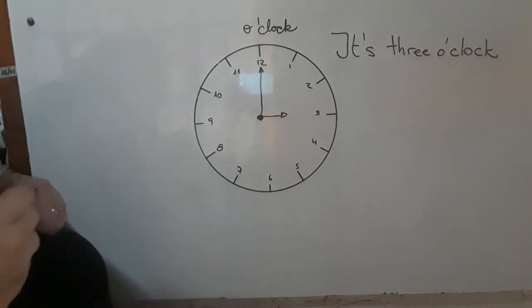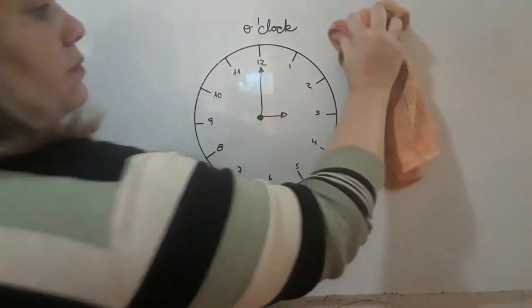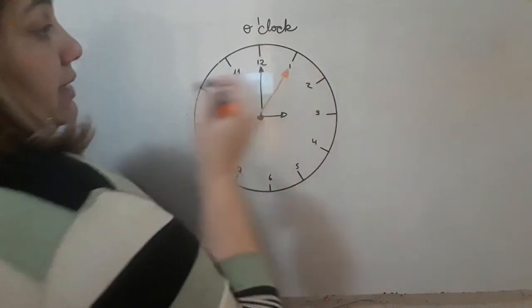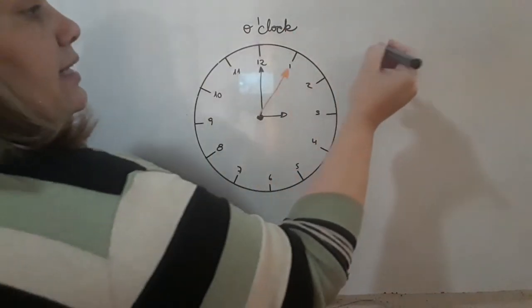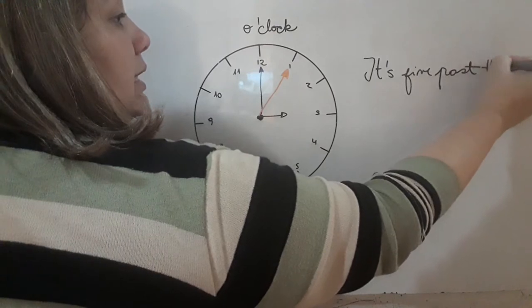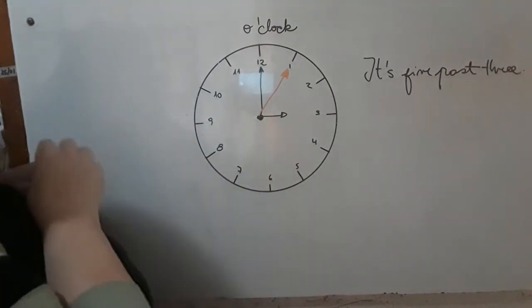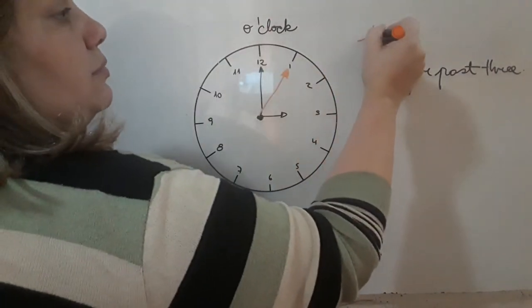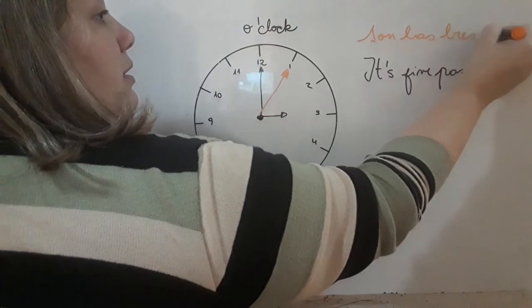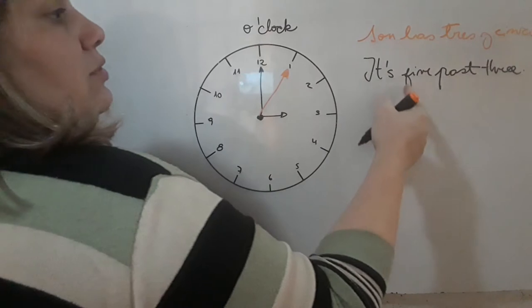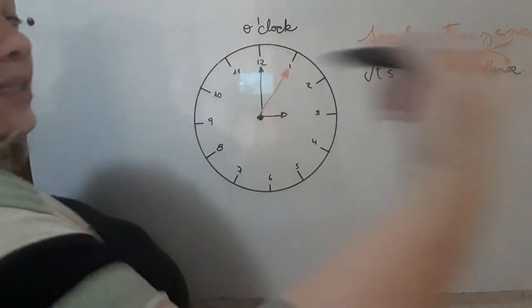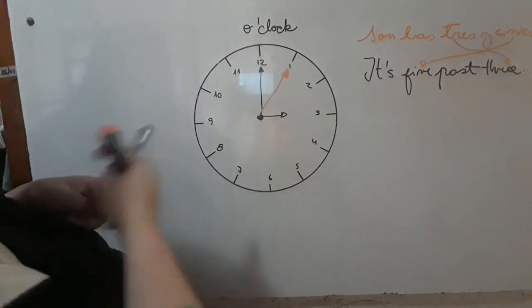And then it changes and it keeps on moving minute after minute. So, imagine that the minute arrow is here y pasaron cinco minutos. Entonces, aquí va a decir, it is five past three. ¿Cómo se dice? Se dice exactamente al revés que en castellano. Nosotros en castellano, como vimos en el video anterior, decimos, son las tres y cinco, pero en inglés decimos, son cinco minutos pasadas las tres. Five is here, tres is here. It is five past three.